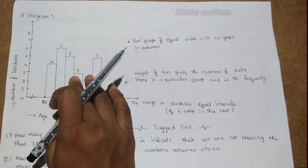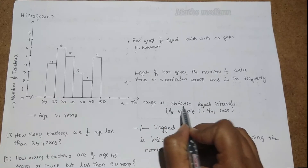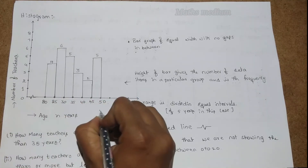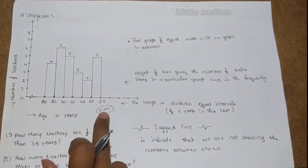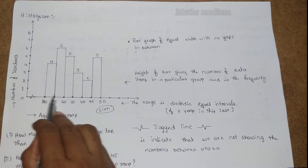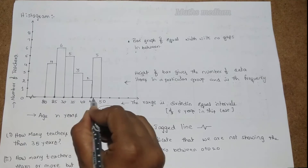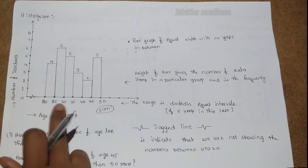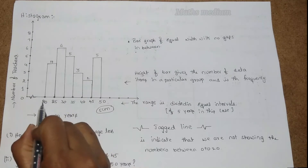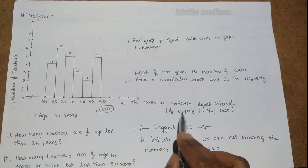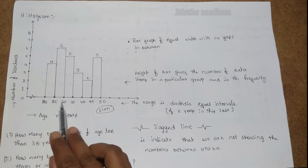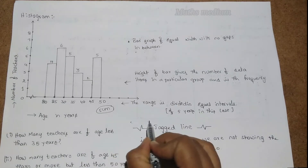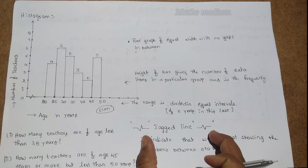Next, the range is divided into equal intervals. Here I take each bar width as 5 centimeters for understanding. The range is divided in equal intervals of 5 years. See here: 20, 25, 30, 35 — each interval has a 5-year gap.